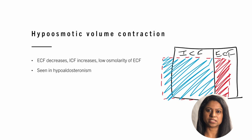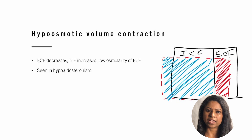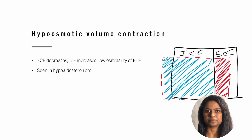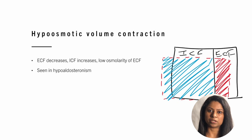Hypoosmotic volume contraction is seen in hypoaldosteronism. Either there is a deficiency of aldosterone or the receptor is insensitive to the actions of aldosterone. Because of that, the body is not able to retain sodium, which leads to a decrease in the osmolarity of the extracellular fluid. Since there is a decrease in osmolarity of the ECF, there will be a fluid shift and fluid will shift from the ECF into the ICF. As a result, ECF volume will decrease whereas ICF volume will increase.